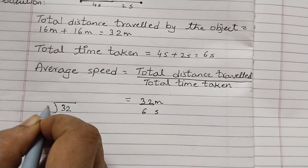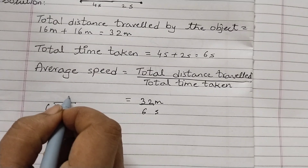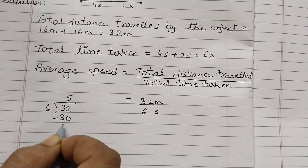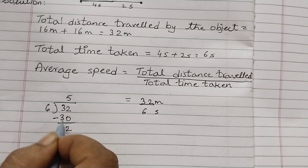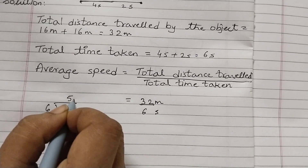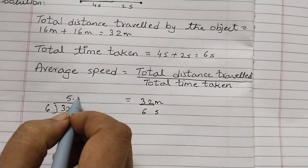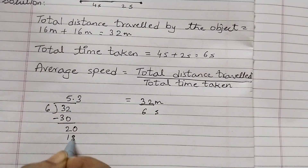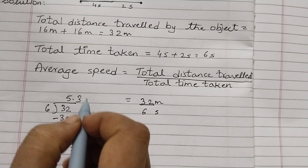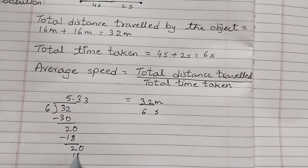Performing the division: 32 divided by 6 — 6 into 5 is 30, 32 minus 30 is 2, bring down a zero and place the decimal point. 6 into 3 is 18, 20 minus 18 is 2, and we get a repeating 2, giving us approximately 5.33.